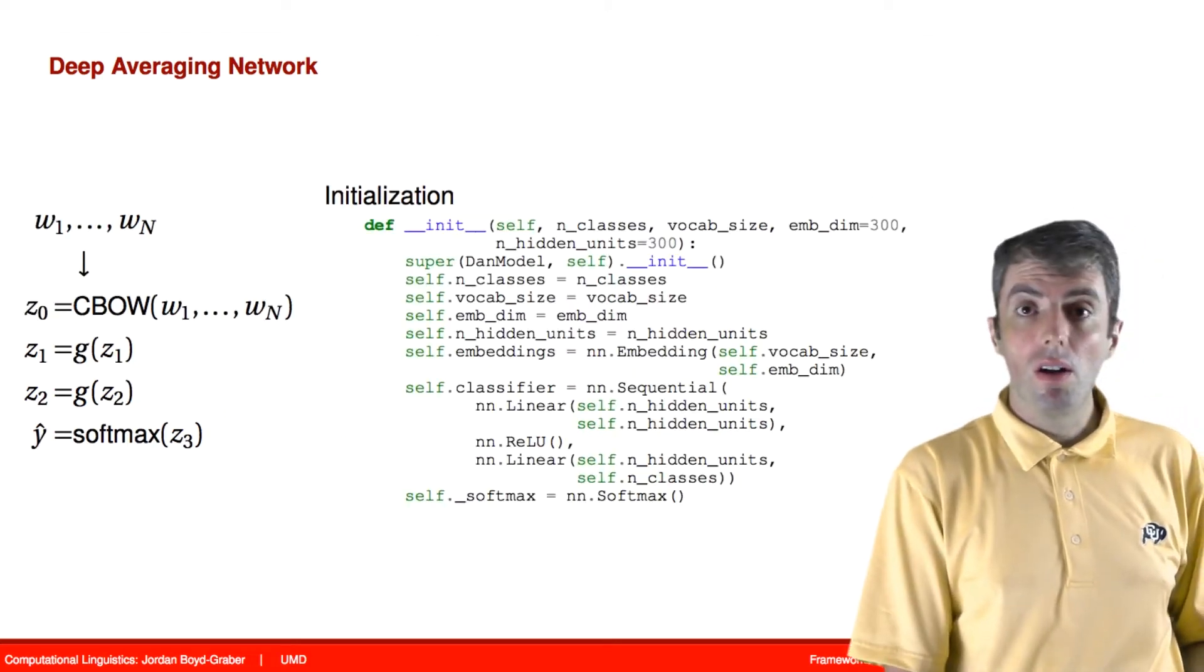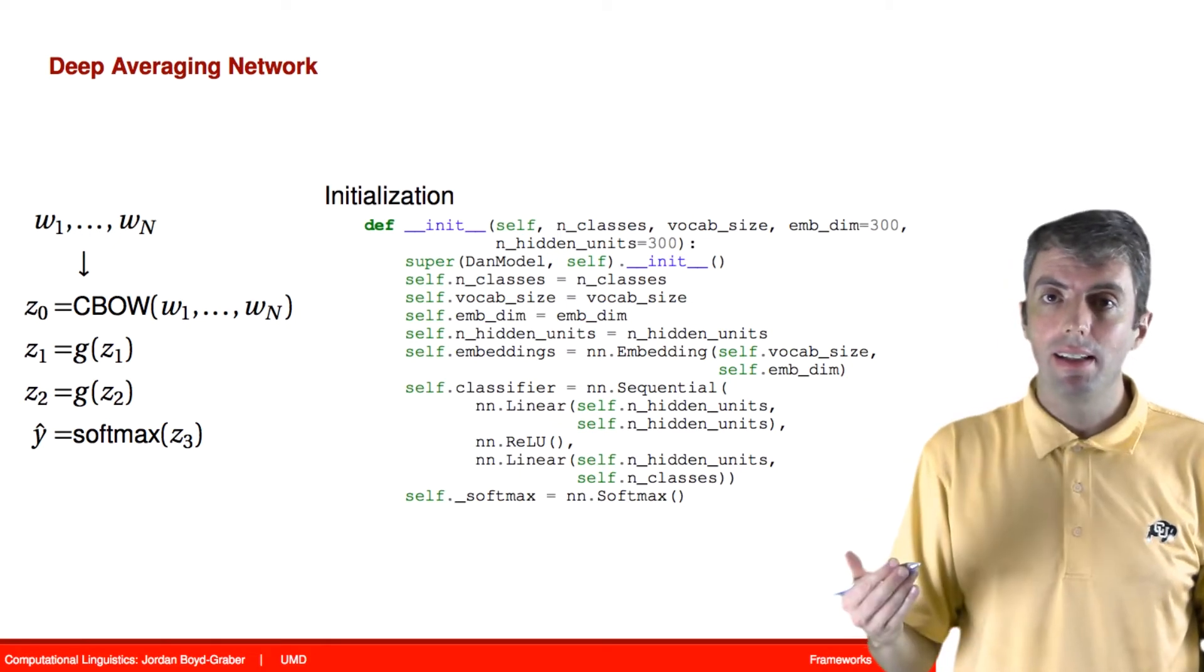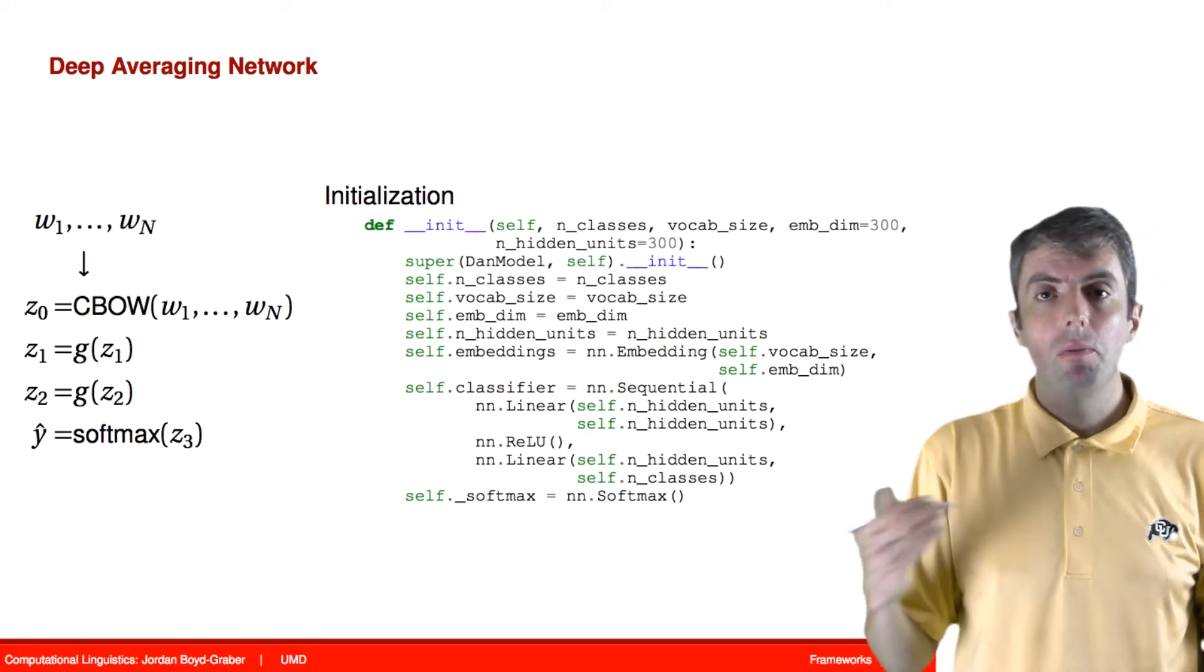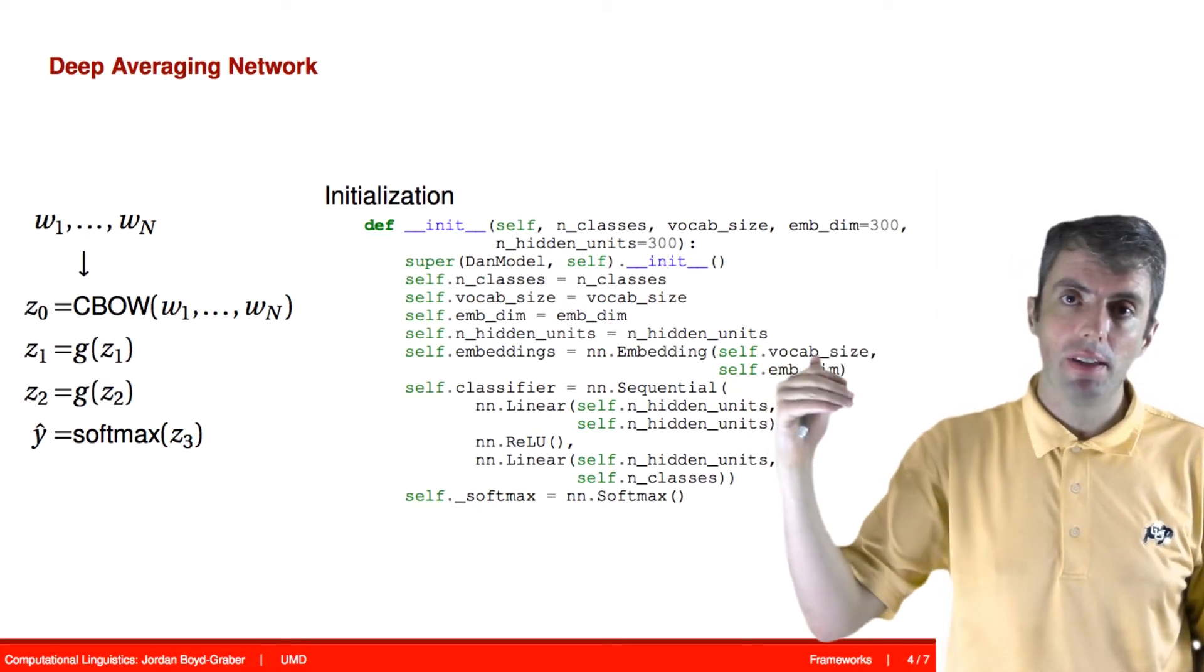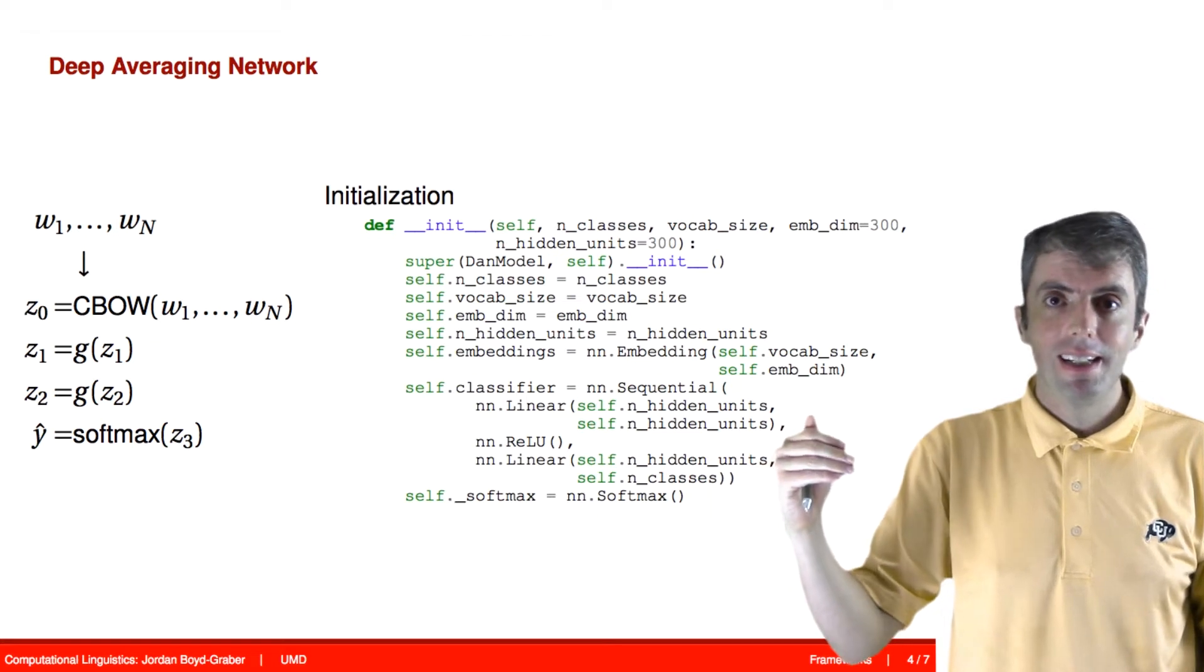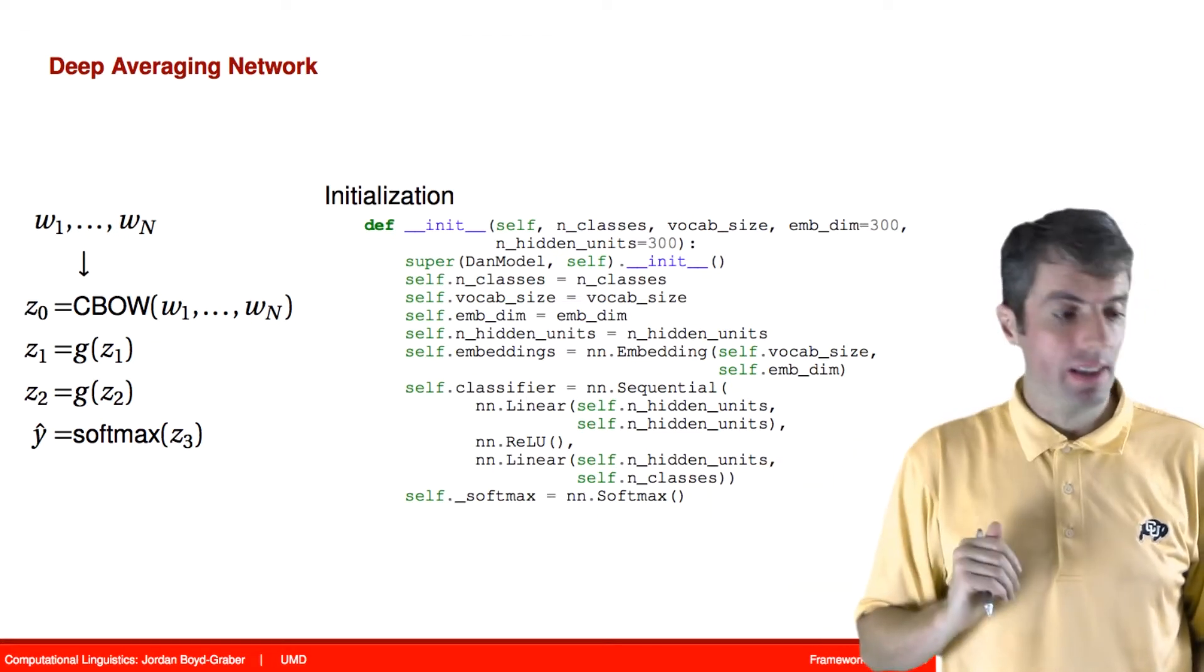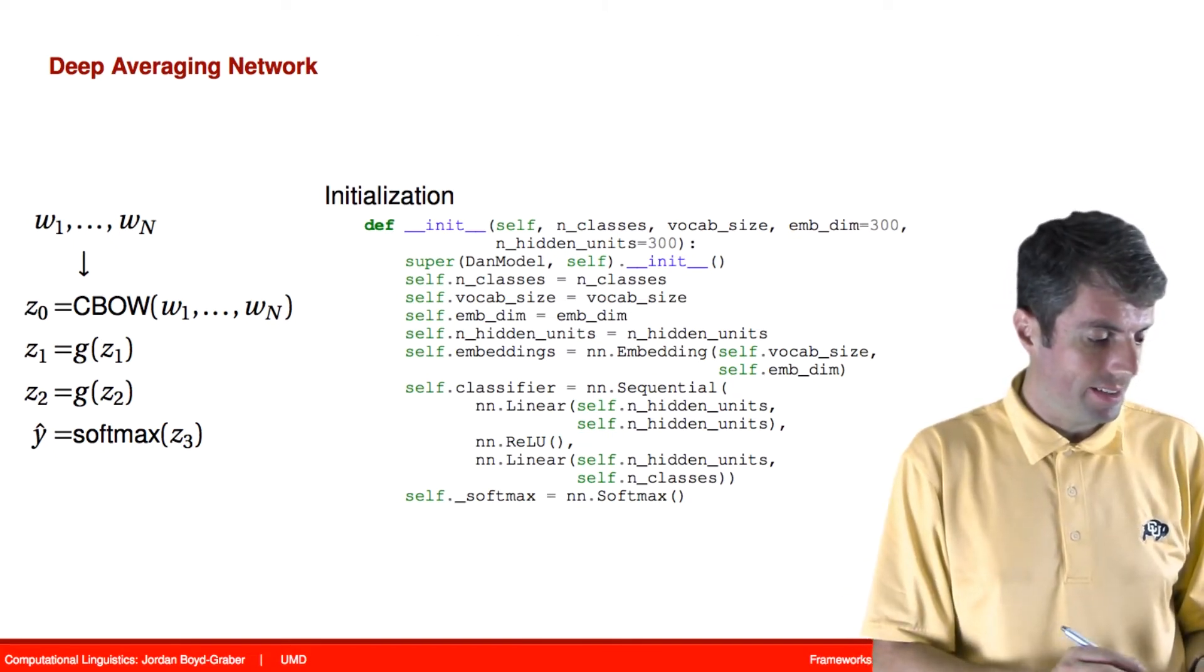Recall that in PyTorch, to create a new model, you need to define a class that extends the neural network module. We'll talk about the definition of the parameters of the model, then the forward function, and then finally how to train the model. First things first, let's look at the initialization.